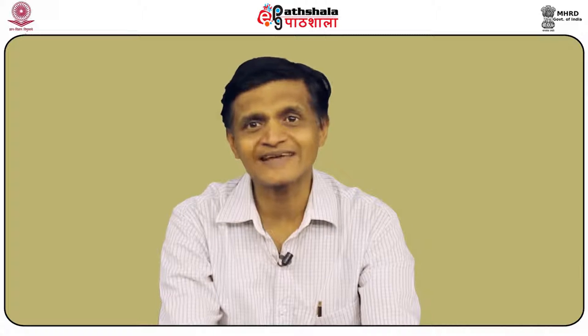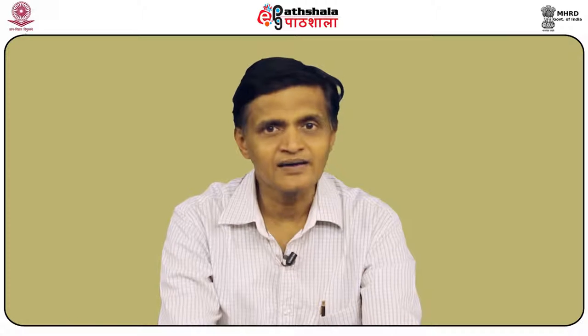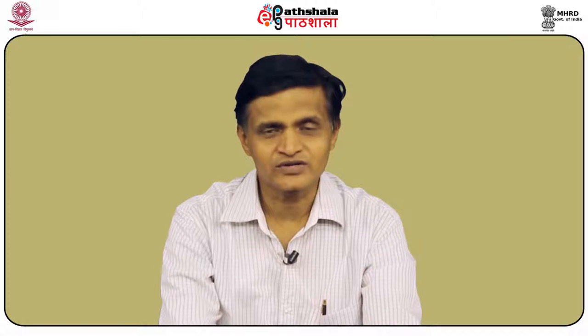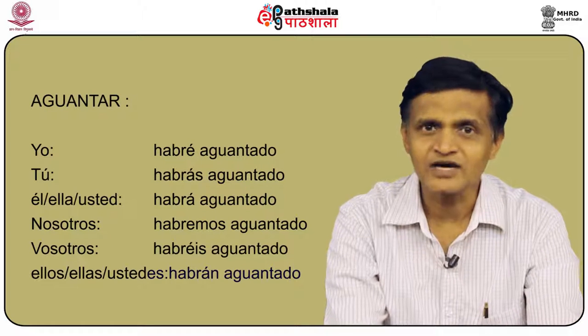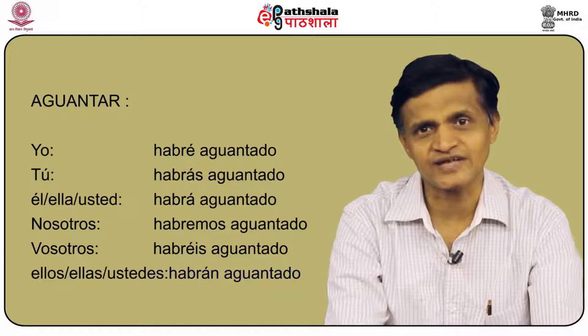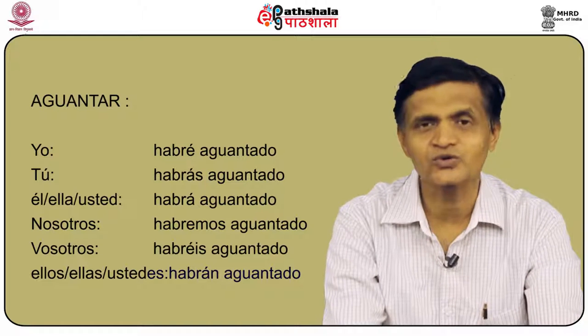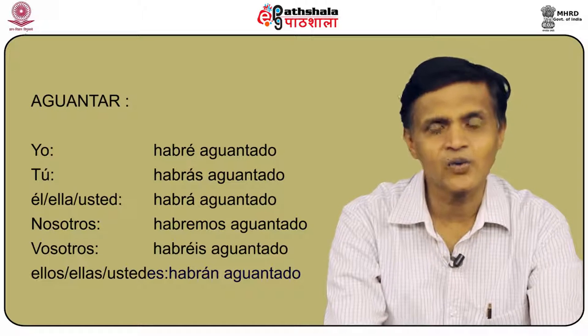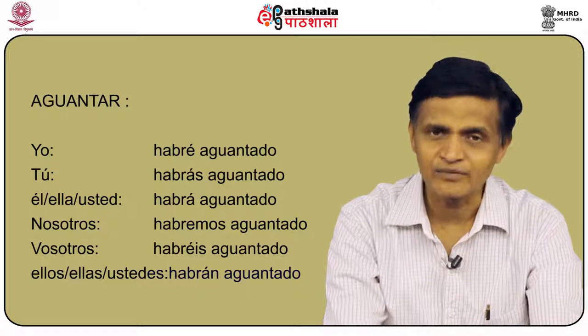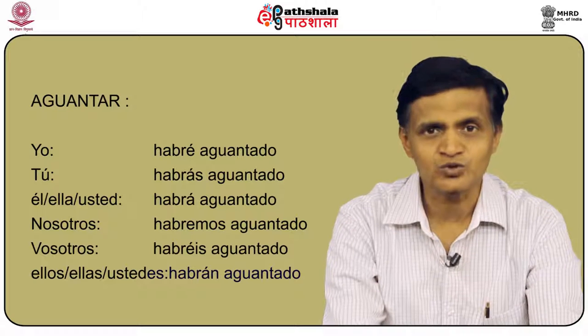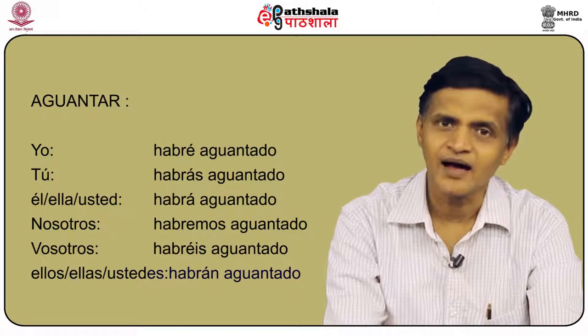Let us go on with aguantar, which is an -ar ending verb. The pattern is the same: habré, habrás, habrá, habremos, habréis, habrán. All we have to do is pick up aguantar, remove the -ar, put -ado, and we have: yo habré aguantado, tú habrás aguantado, él/ella/usted habrá aguantado, nosotros habremos aguantado, vosotros habréis aguantado, and ellos/ellas/ustedes habrán aguantado.